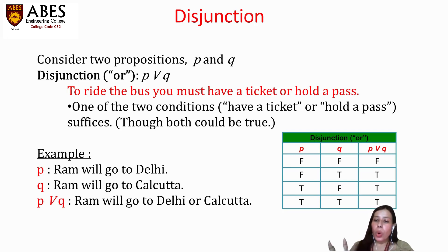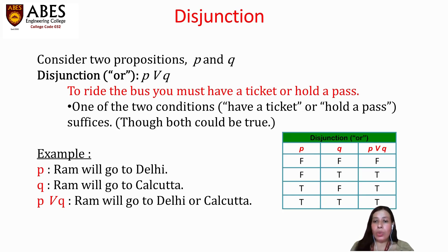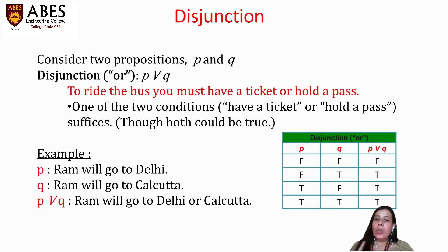He can go to both, or either Delhi or Calcutta. Looking at the truth table for P and Q and their disjunction P ∨ Q: if P is false and Q is false then P ∨ Q is also false. If P is false but Q is true then P ∨ Q is true. P ∨ Q will only hold the value false if both P and Q are false; otherwise for all other combinations it holds the value true.